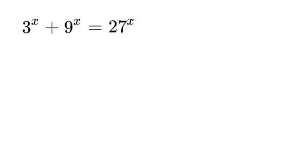Hello, welcome to another Olympiad math video. In this video we are going to solve for x in the equation 3 to the power of x plus 9 to the power of x equals 27 to the power of x. First and foremost, please subscribe so I can keep making videos.